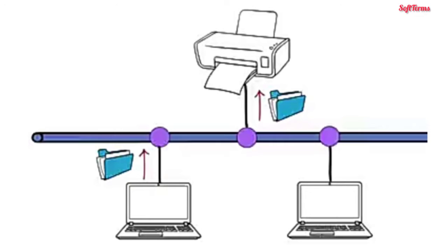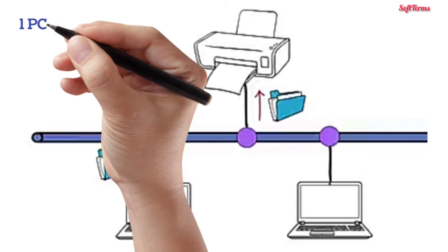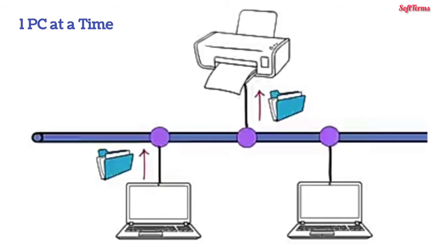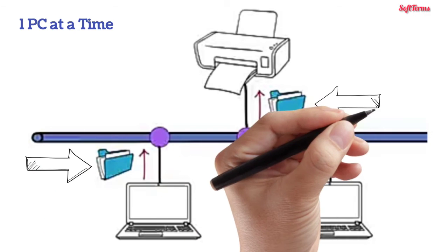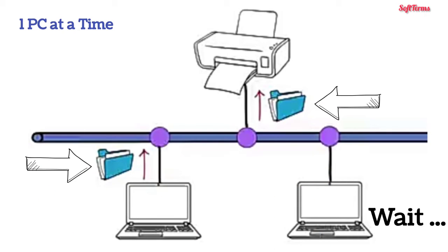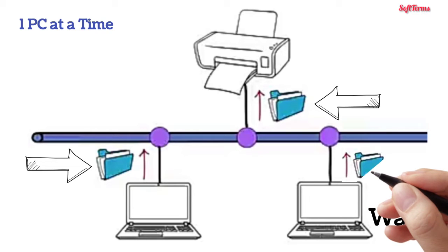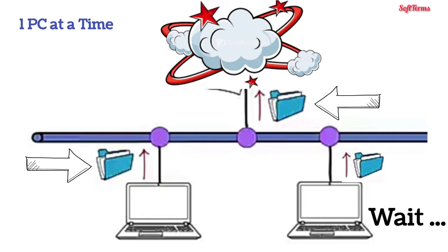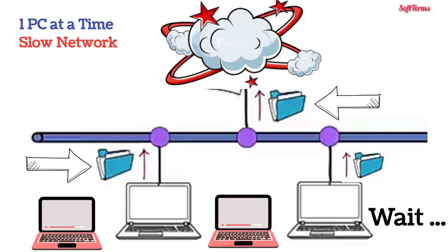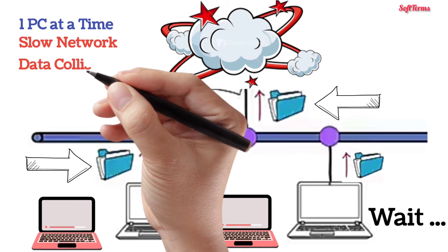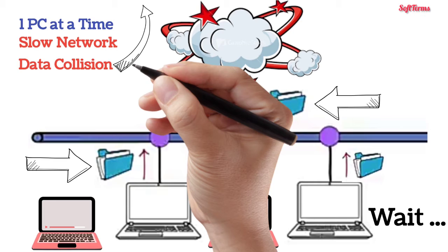In a bus topology, only one computer can transmit data at the same time. So while one computer is sending a file to a printer, other computers have to wait. If other computers do start sending data at the same time, it will collide and corrupt the whole data. In such a case, data should be retransmitted. Therefore, if more computers connect to the same central cable, the network will become slow and also increase the chances of data collisions.